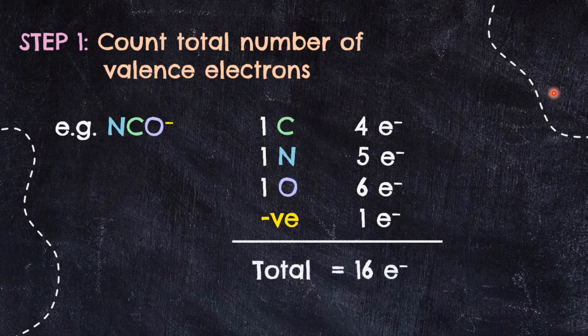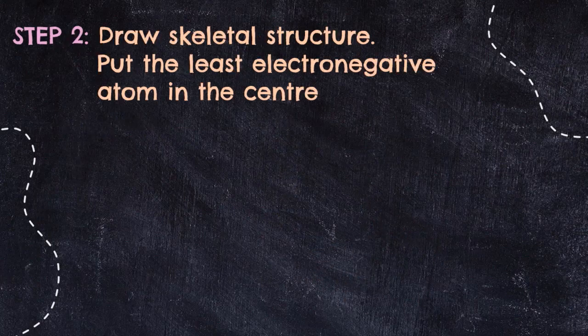So we have a total of 4 + 5 + 6 + 1, altogether 16 electrons. Next, draw the skeletal structure. The skeletal structure shows the bonds between the elements, but before drawing, you should first assign which atom will be the central atom.